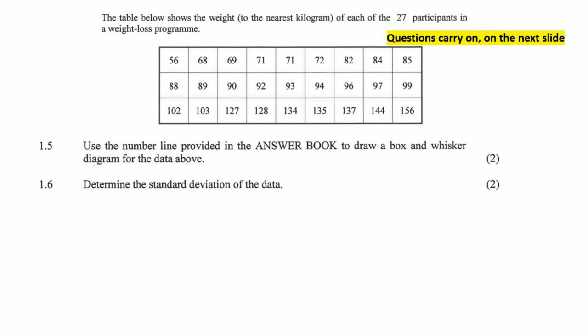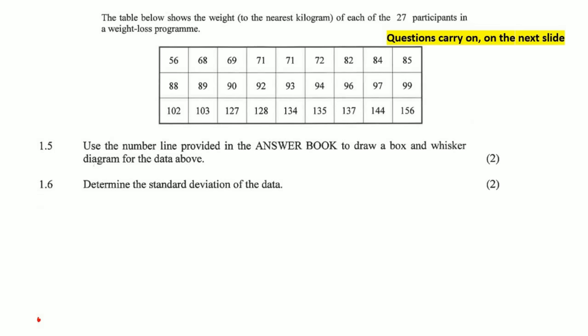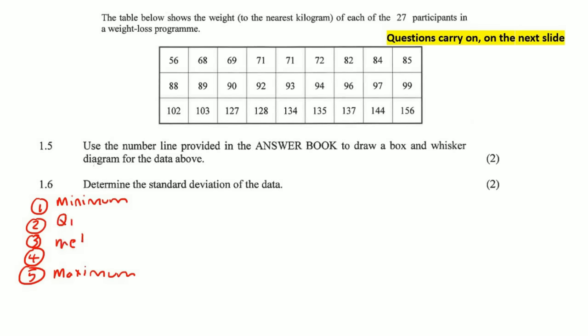Use the number line provided in the answer book to draw a box and whisker diagram. A box and whisker has five parts: the minimum value, maximum value, Q1, the median, and Q3. We already have all five values: min = 56, max = 156, Q1 = 82, median = 93, Q3 = 127.